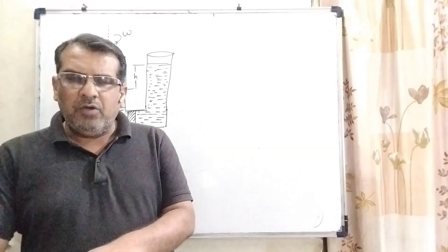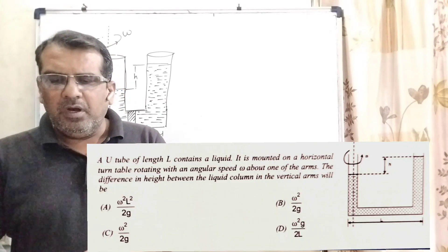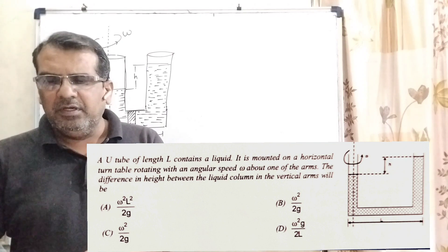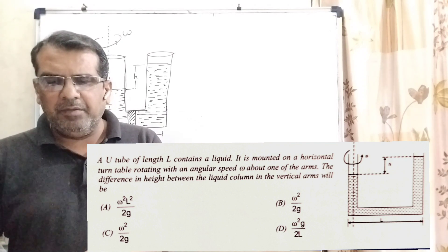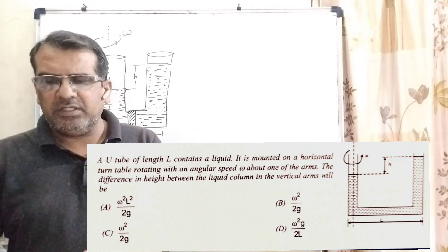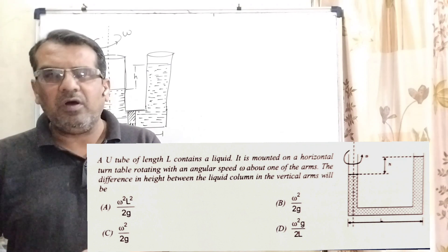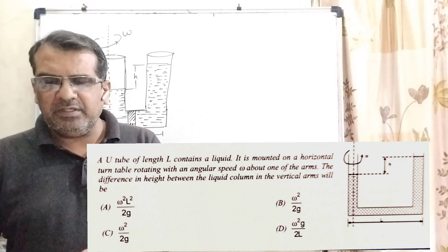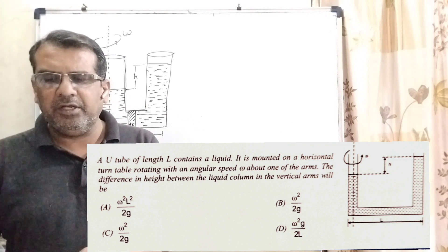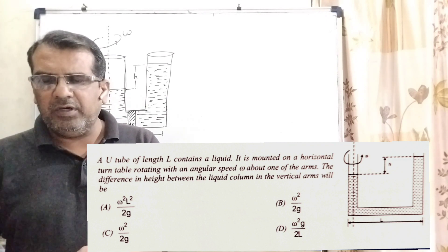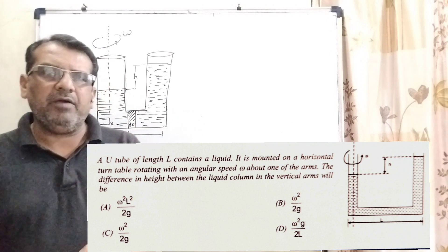Thank you once again. Question: A U-tube of length L contains a liquid. It is mounted on a horizontal turntable rotating with angular speed omega about one of the arms. The difference in height between the liquid columns in the vertical arms will be - here we have given four options.